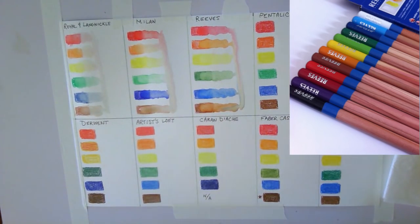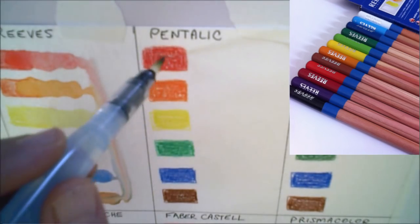The box for the Reeves watercolors does show the color names. We have white, yellow, orange, dark vermilion, red, light violet, light blue, dark blue, sap green, mid green, mid brown, and black.